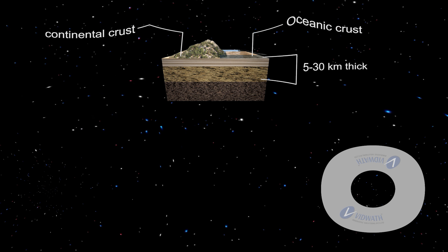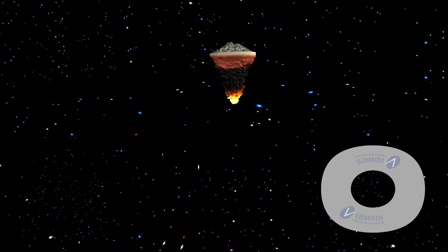The thickness of the crust varies under the oceanic and continental areas. Oceanic crust is thinner, that is 5 to 30 km thick, as compared to the continental crust that is 50 to 70 km thick. The continental crust is thicker in the areas of major mountain systems. It is as much as 70 to 100 km thick in the Himalayan region.